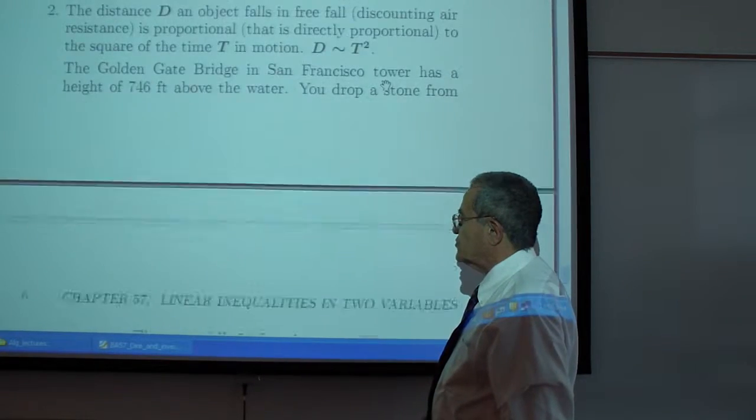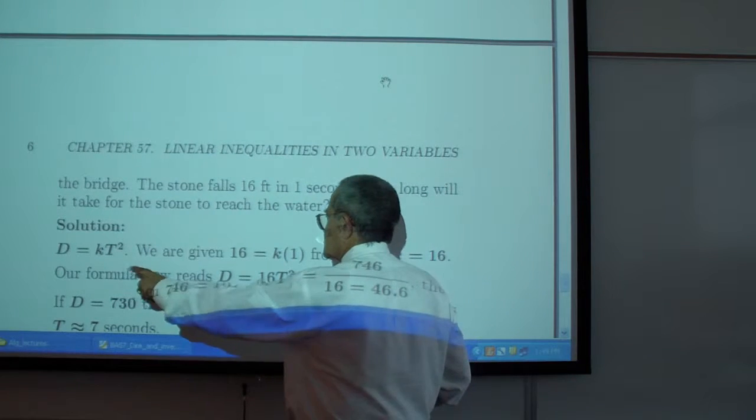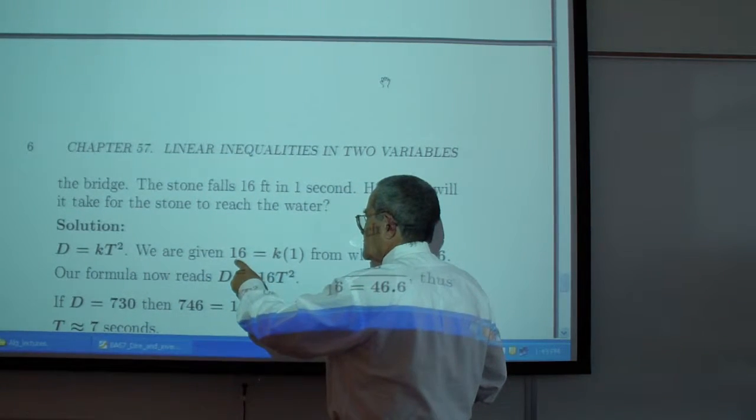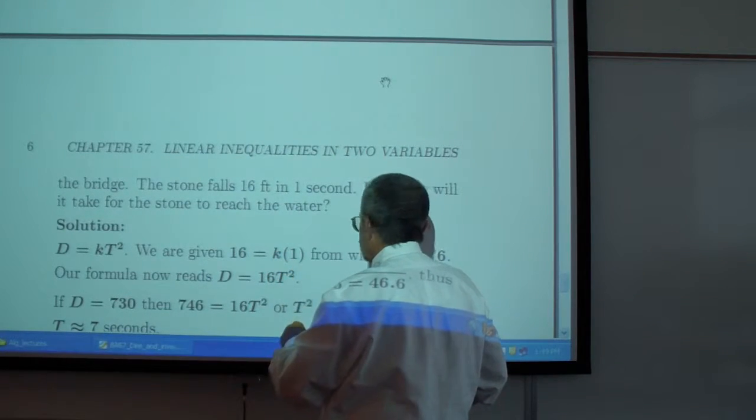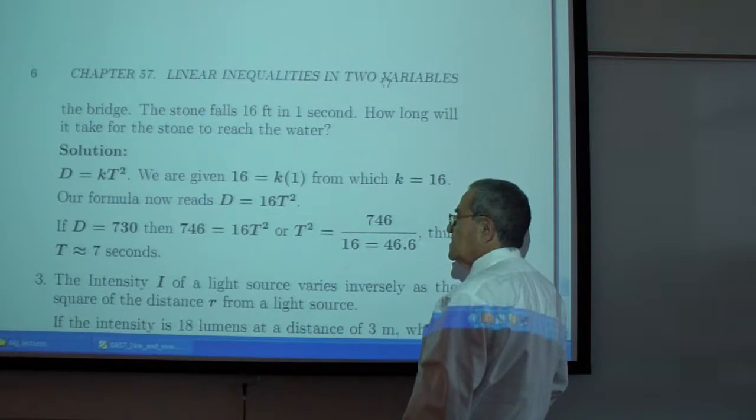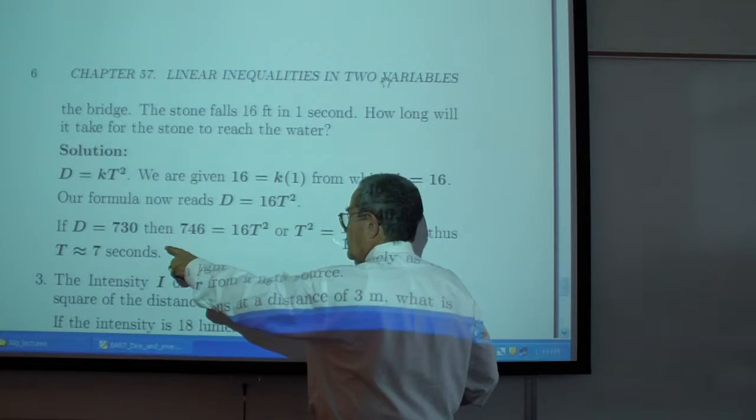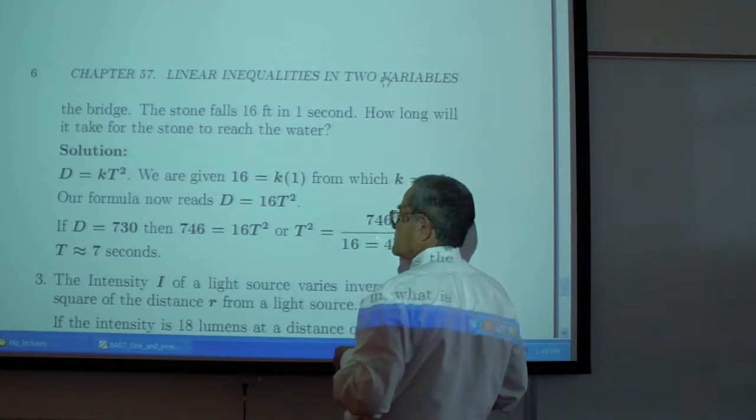Exercise two. D is directly proportional to the square of the time. So when D is 16, T is 1, K is 16, so D is 16 T squared. If D is 730, should that be 130 or should that be 746?